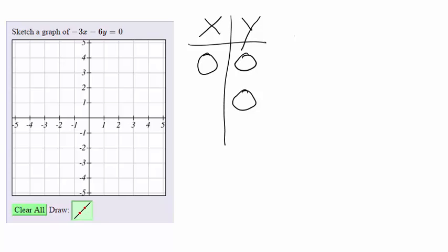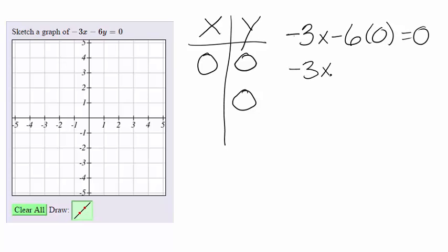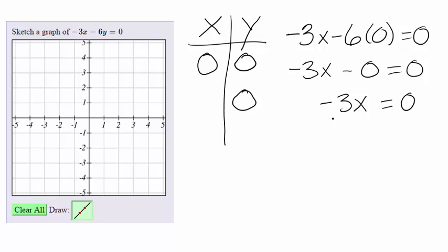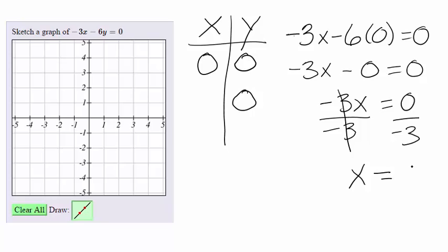Now let's let y be 0. Putting that into our equation, we get negative 3x minus 6 times 0 equals 0, which would be negative 3x. Zero times anything is 0, so negative 3x minus 0 is negative 3x equal to 0. Dividing both sides by negative 3, negative 3 divided by negative 3 cancels, and x equals 0 divided by anything is 0.